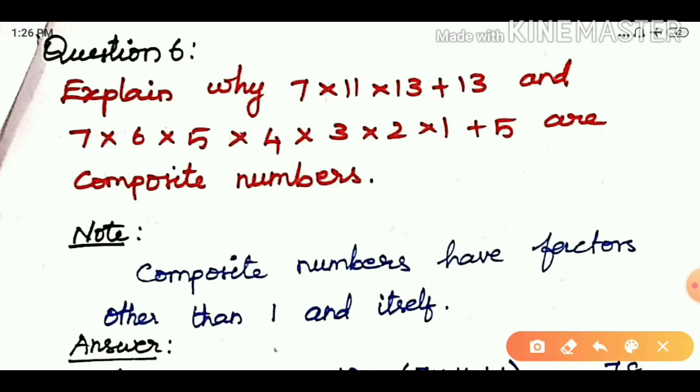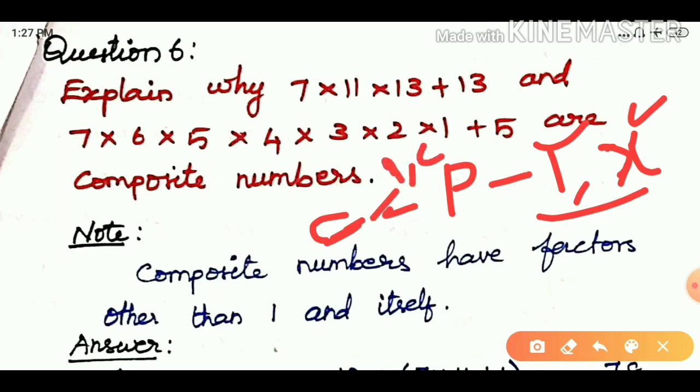First, let's recall what composite numbers are. Composite numbers have factors other than 1 and itself. Unlike prime numbers which can only be divided by 1 and the number itself, composite numbers have other factors. That's what makes them composite numbers.